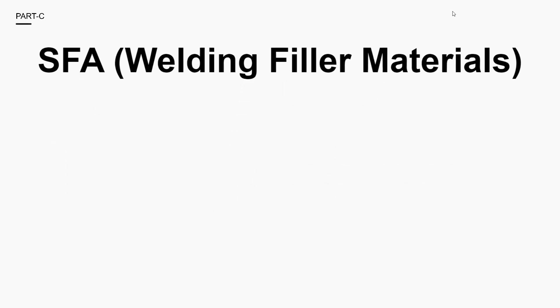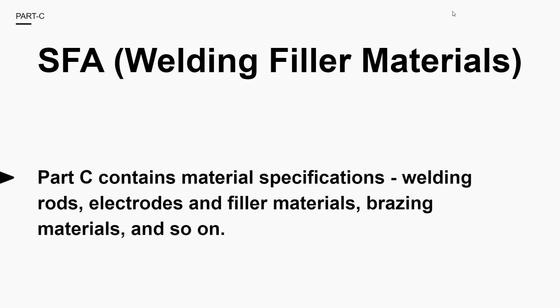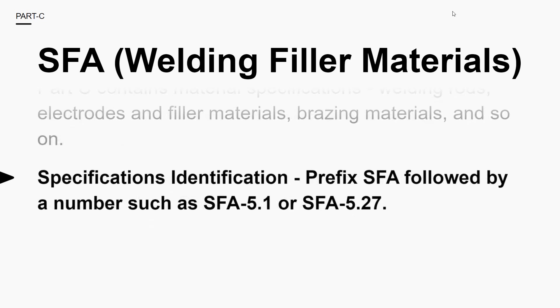In Part C, which deals with welding filler materials — also referred to as SFA — we have all the specifications regarding welding rods, electrodes, and filler metals. These specifications are identified by the prefix SFA, followed by a number such as SFA 5.1 or SFA 5.27.